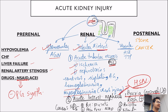Causes of acute interstitial nephritis can be remembered as five Ps. First P is a P-like diuretic. Second P is pain-free like NSAIDs. Third P is penicillin. Fourth P is rifampin. Fifth P is sulpha drug. Post-renal causes include stones and strictures.